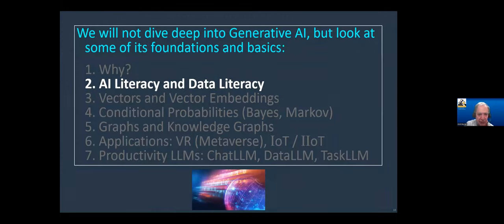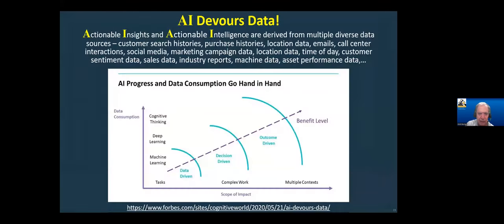Let's talk about AI literacy and data literacy, because firm foundations are key — being able to understand this. A lot of people think generative AI is just some kind of magic box, but it's not a magic box — it devours data. Large language models are called large language models because they consume large amounts of language, large amounts of text. They learn the patterns in the words — they learn what is the next best word in a sequence, based upon these large corpora, these large collections of language. AI, no matter whether it's language AI, vision AI, or whatever, devours data. That's a fundamental thing that has to be known at all times.